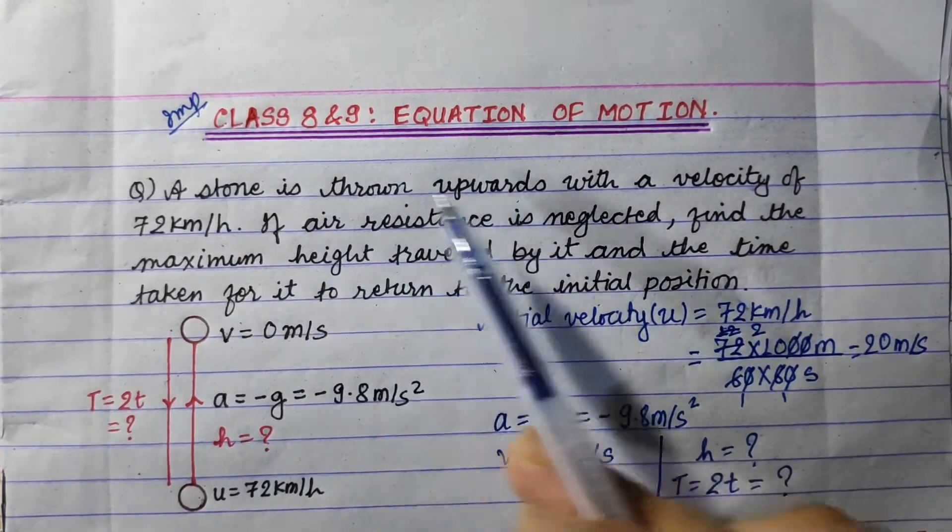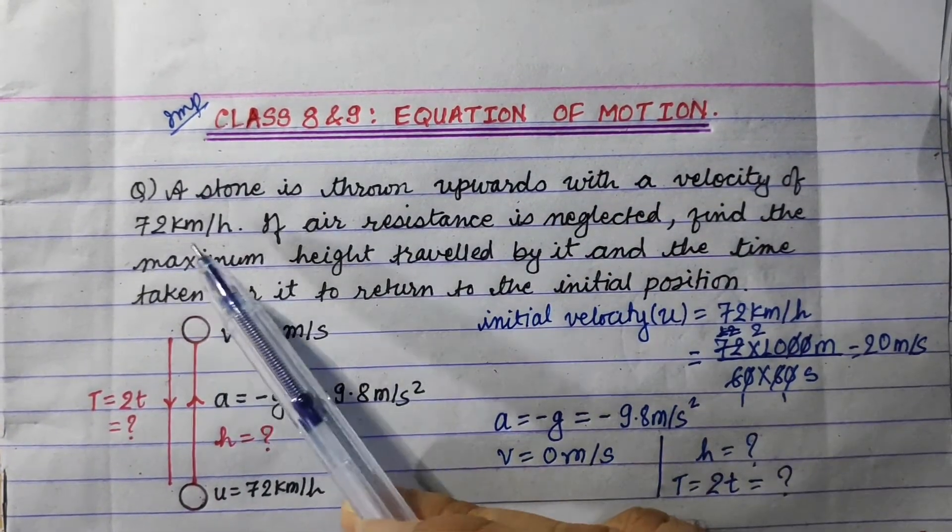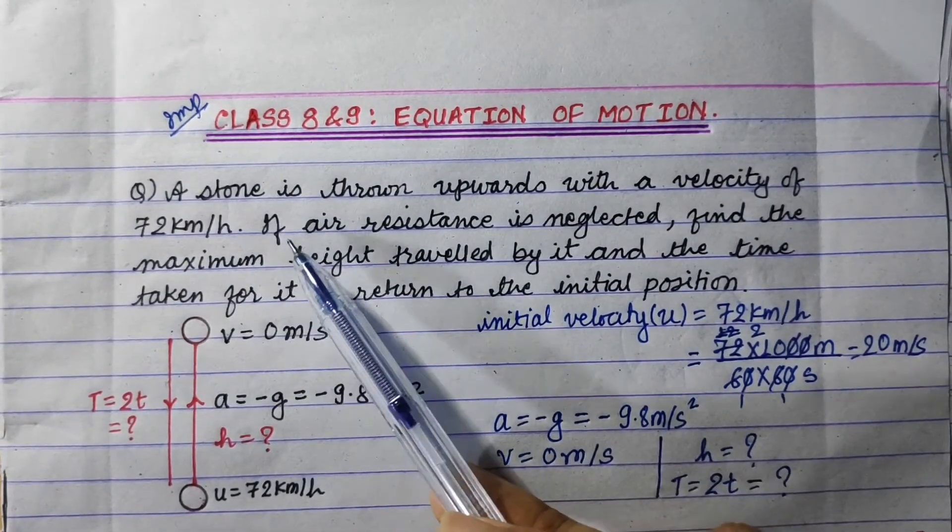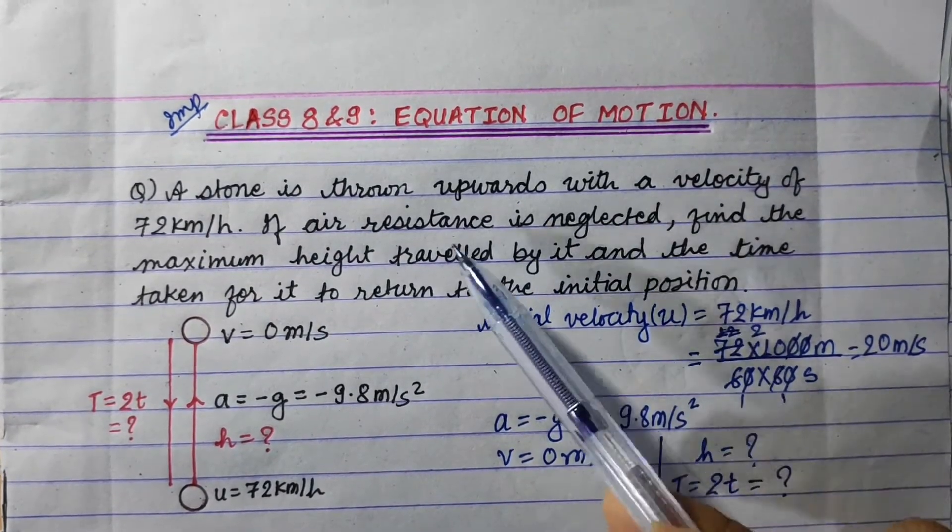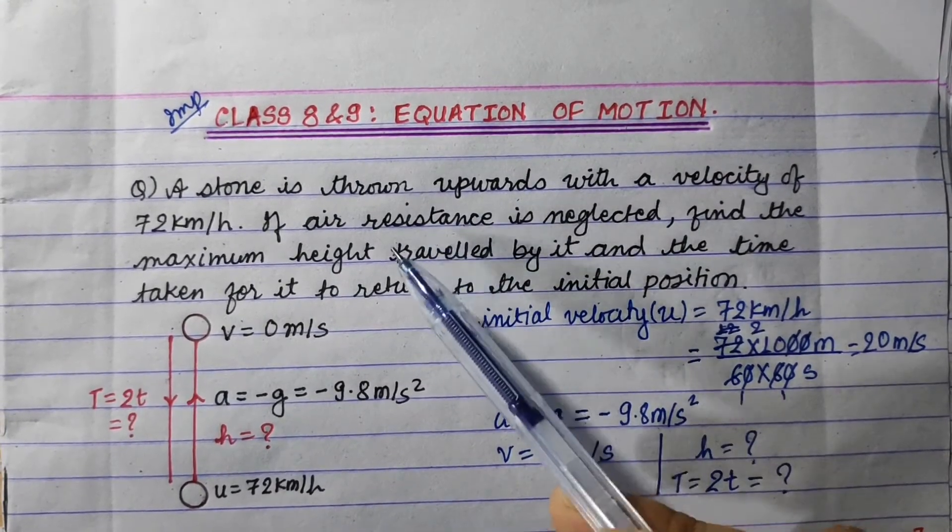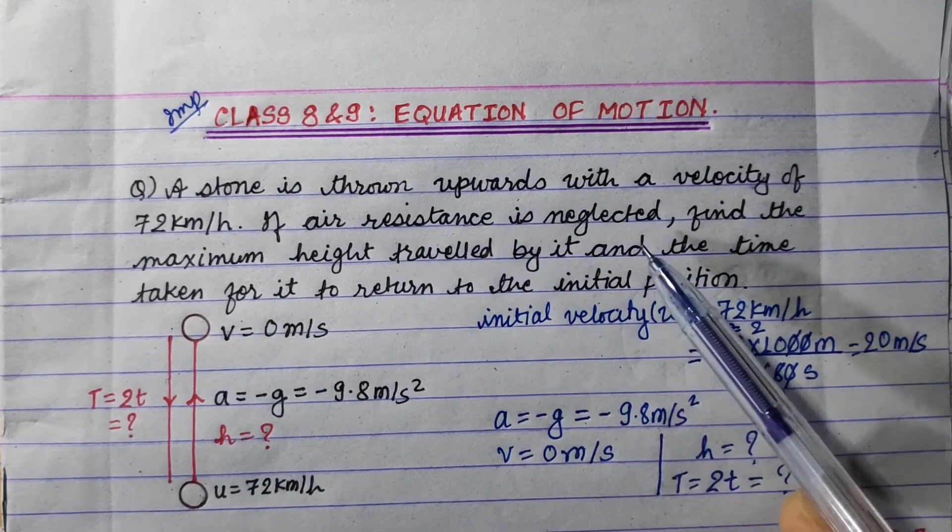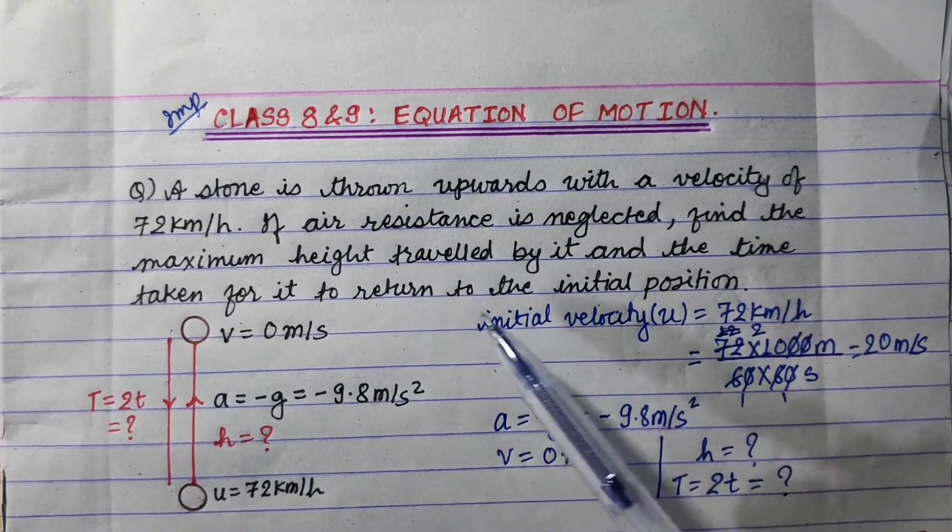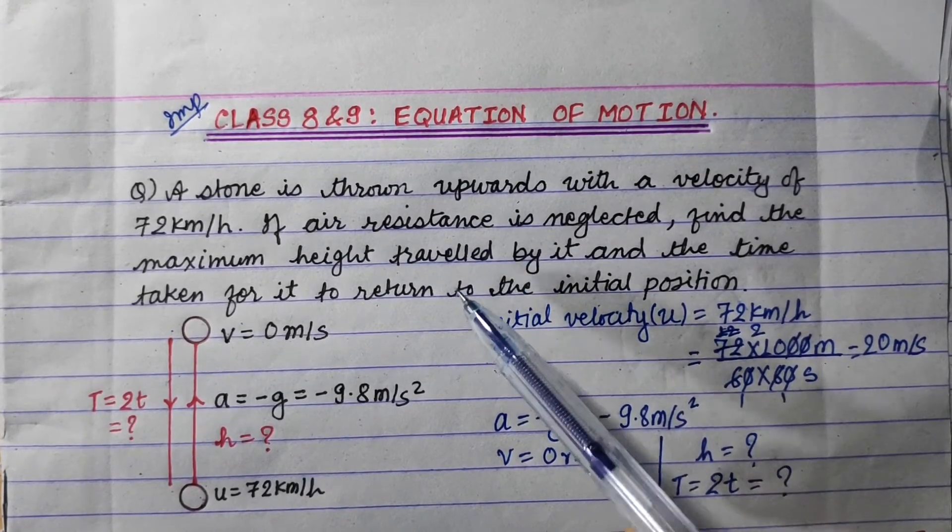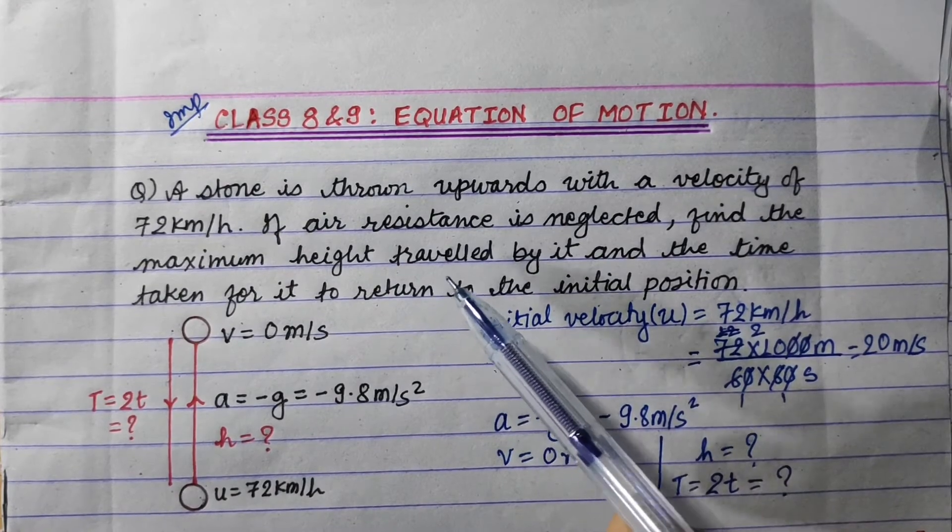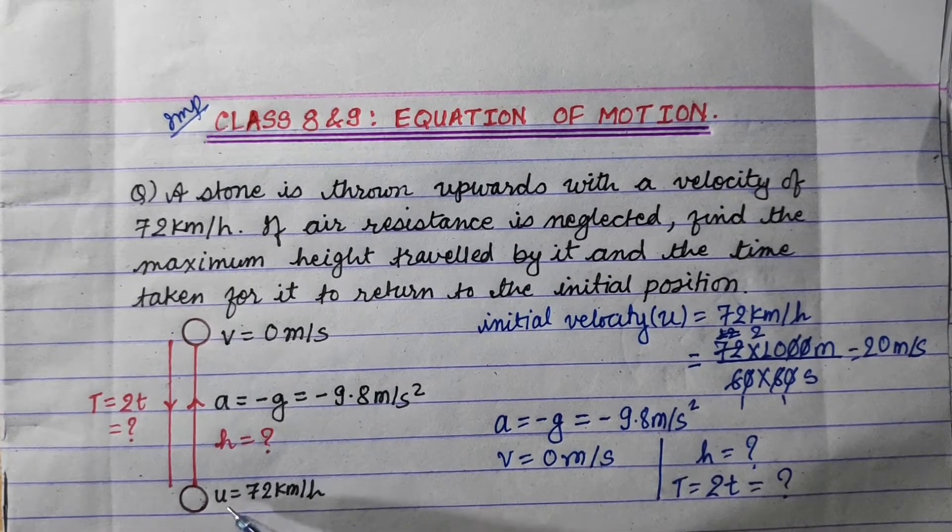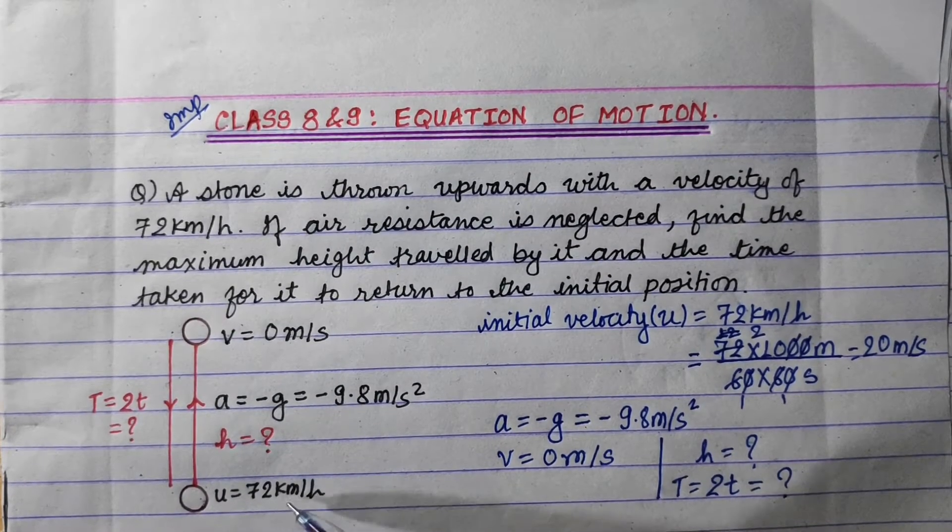A stone is thrown upwards with a velocity of 72 km per hour. If air resistance is neglected, find the maximum height traveled by it and the time taken for it to return to the initial position. Let me draw the diagram.